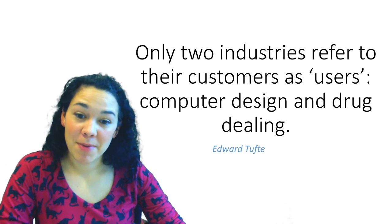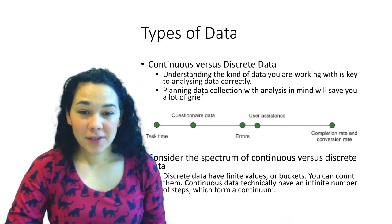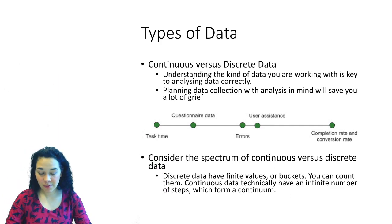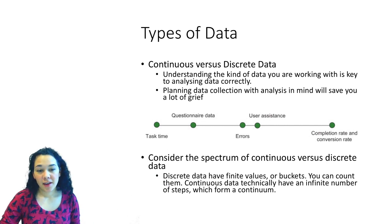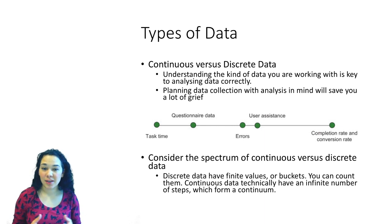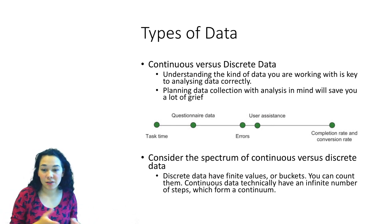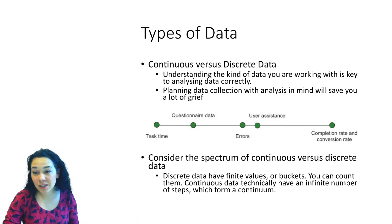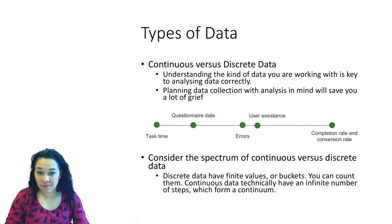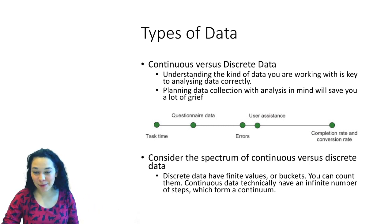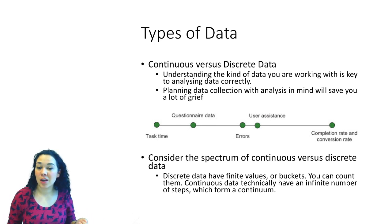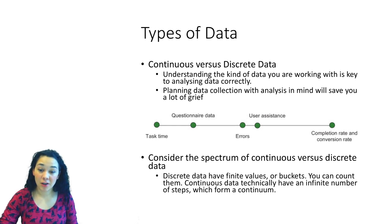So let's get into the details and start talking about data. It's important to think about the different types of data that you might collect — specifically continuous versus discrete data. Understanding the kind of data that you have is key to how you plan your analysis. Applying the wrong method to the wrong data type will lead to invalid results. On one side of the spectrum we have continuous data like task time, and on the other end we have things like completion rate and conversion rate, which are discrete values.